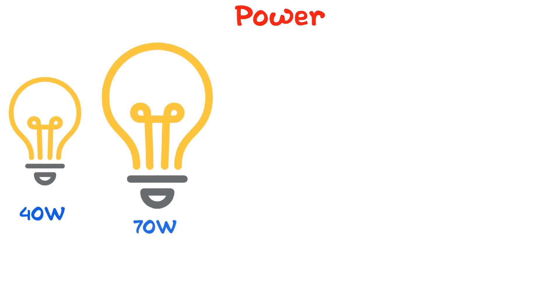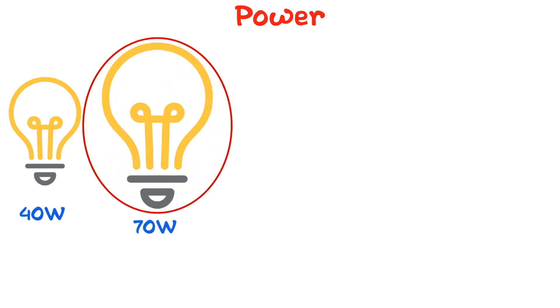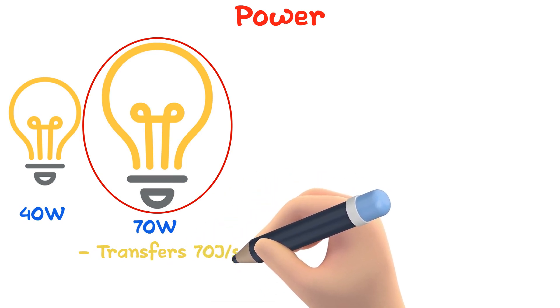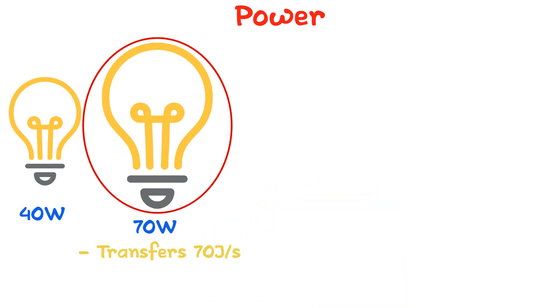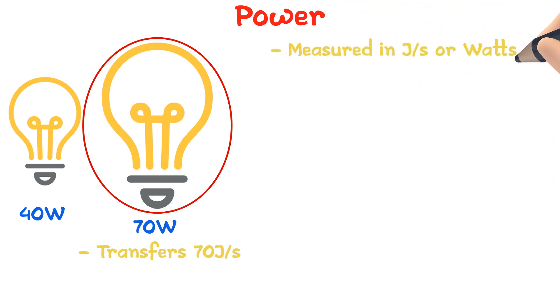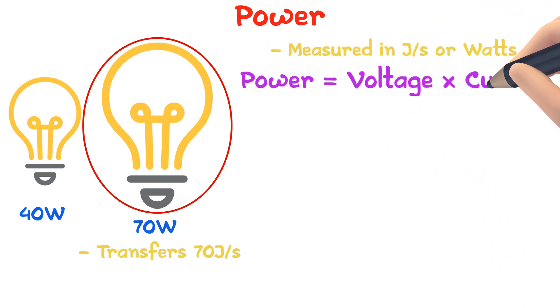So let's say you have a 40 watt bulb and a 70 watt bulb — which one is brighter? Obviously the 70 watt bulb, since it transfers 70 joules of energy every second, which is 30 joules more than the 40 watt bulb. Power is measured in joules per second, or watts. Power is related to voltage and current; the equation being power equals voltage multiplied by current.